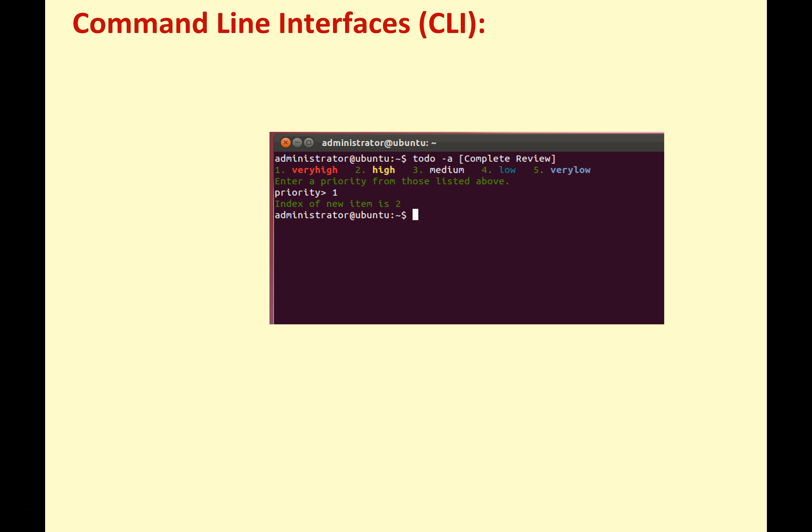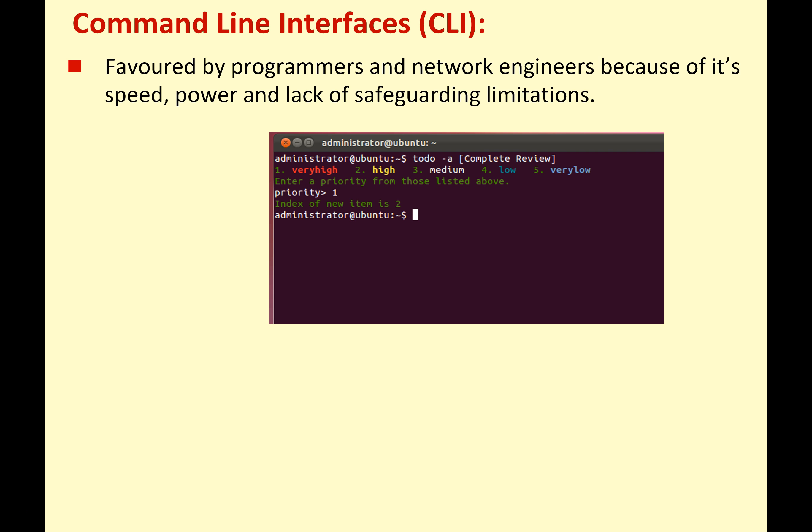Here's another example of a command line interface. They're often favored by programmers and network engineers because a CLI is fast, powerful, and has a lack of safeguarding limitations. What does that mean? It means that when you do something like delete your hard disk, it's not going to ask you 'are you sure, yes or no?' like on a modern graphical interface — if you type in the command, it's just going to do it. So if you say format hard disk, it formats your hard disk. But if you're an expert user — a network engineer or a system administrator — that's brilliant because you can do everything really fast and powerfully.